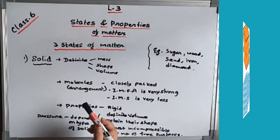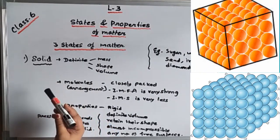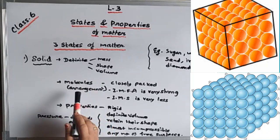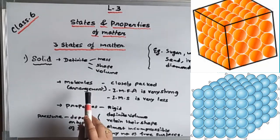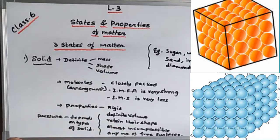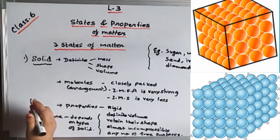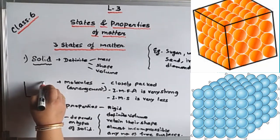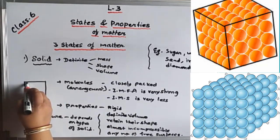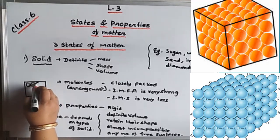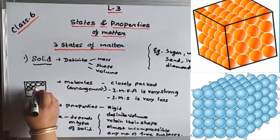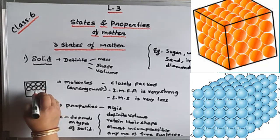Any form of matter is made up of atoms and molecules. The arrangement of molecules inside the solid — the molecules are closely packed. Let us see with the help of a diagram. Suppose this is a solid — the molecules are closely, very closely packed, with very little distance between them.